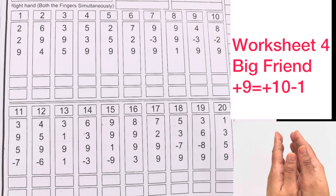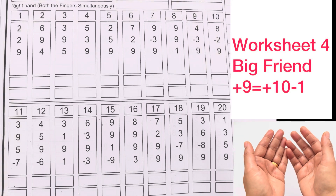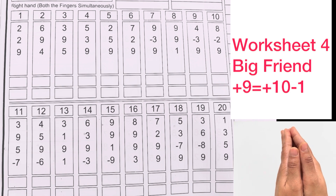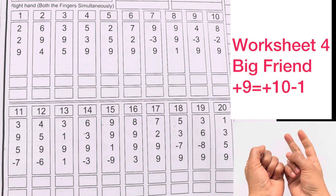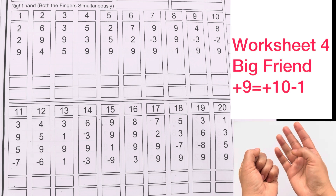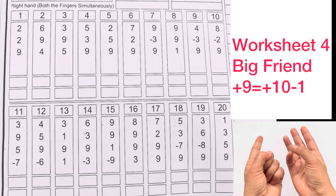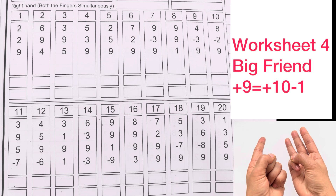Worksheet number 4. Big friend formula: plus 9 equals plus 10 minus 1. First question is 2 plus 2 plus 9, which equals plus 10 minus 1. Answer is 13.